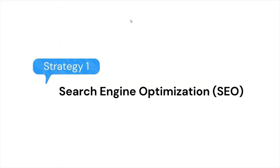Let's start with the first one, which is search engine optimization. This is probably going to be the most beneficial for everyone, as you'll see when we discuss the pros and cons. As the name suggests, search engine — the most popular being Google — and we're optimizing our photography website to rank higher on Google.